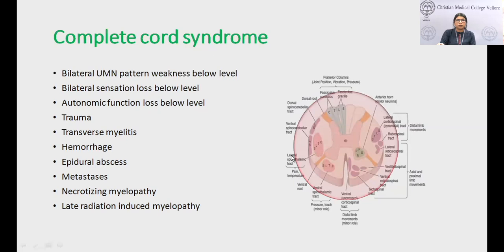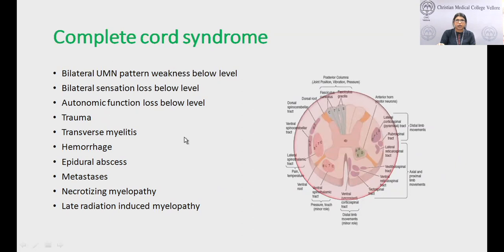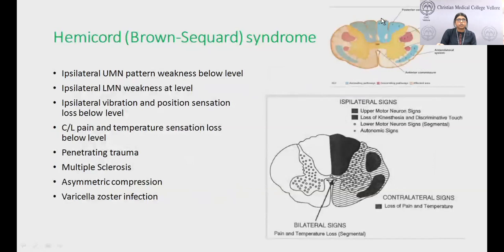Complete cord syndrome involves complete horizontal involvement of the spinal cord, with bilateral weakness below the level, sensory loss to pain, temperature, vibration, and position sense below the level, and autonomic dysfunction below the level. The most common etiologies are trauma, complete transverse myelitis, hemorrhage into the spinal cord, epidural abscess, metastasis, necrotizing myelopathy, and late radiation-induced myelopathy.